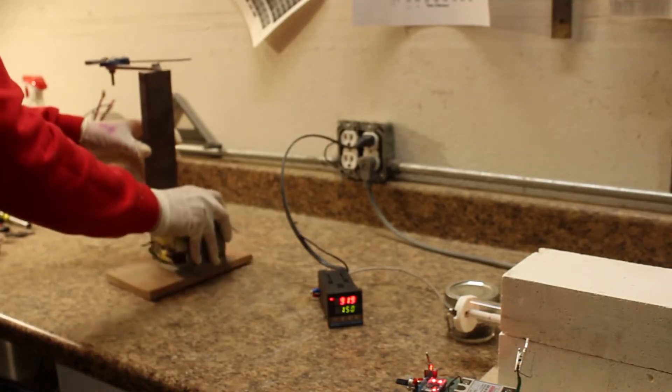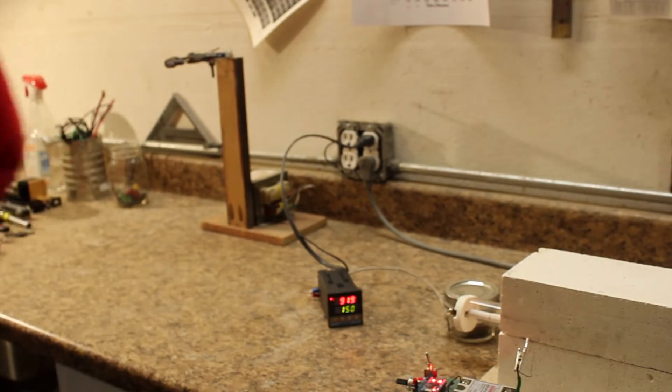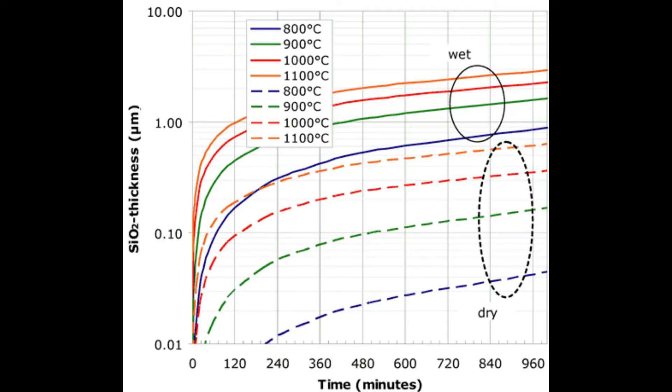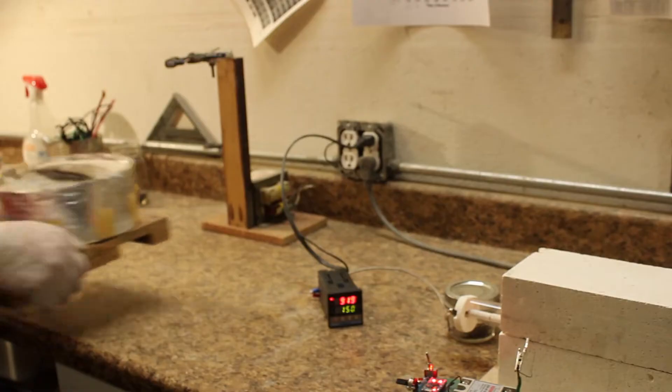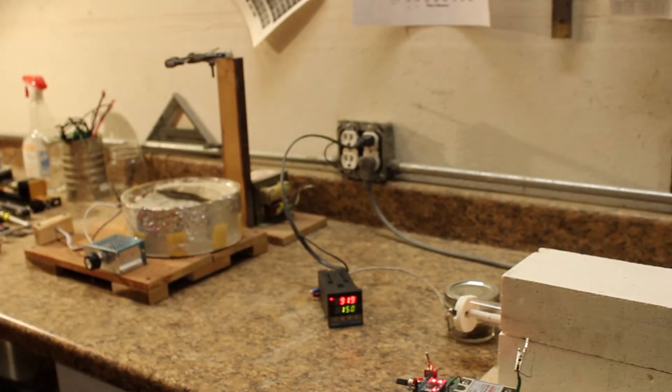To grow an oxide on a silicon piece we have to heat it, but the oxide growth is very slow this way. To accelerate it we pump steam over the silicon. So I set up an apparatus out of some glassware on a heating mantle. The steam will then flow through a piece of vinyl tubing.